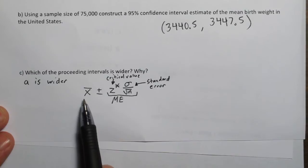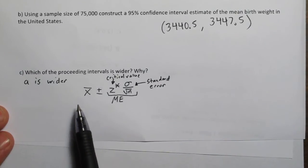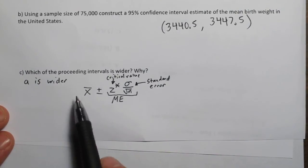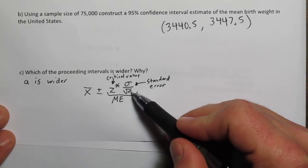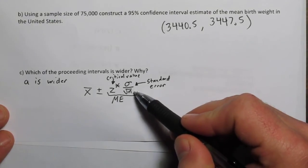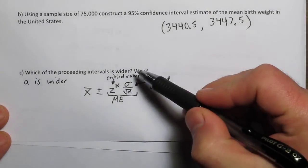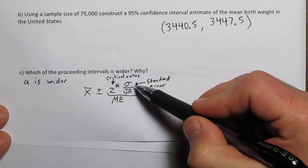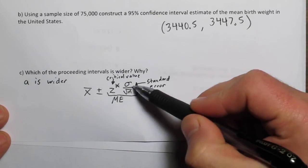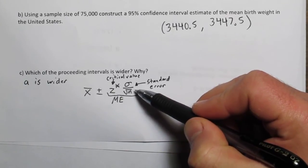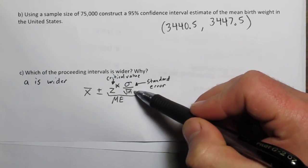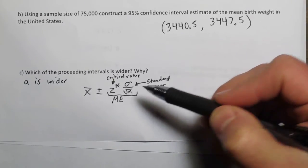So the sample means the same in either case. So what actually caused A to be a wider interval? To be a wider interval, the margin of error would have to be a larger number. So the only thing that changed is in the first problem, this was 75, and in the second problem, this was 75,000. So sigma was the same in either problem. And if you divide it by the square root of 75, you get a number. But if you divide it by the square root of 75,000, you get a much smaller number because you're dividing the same sigma by a larger value.